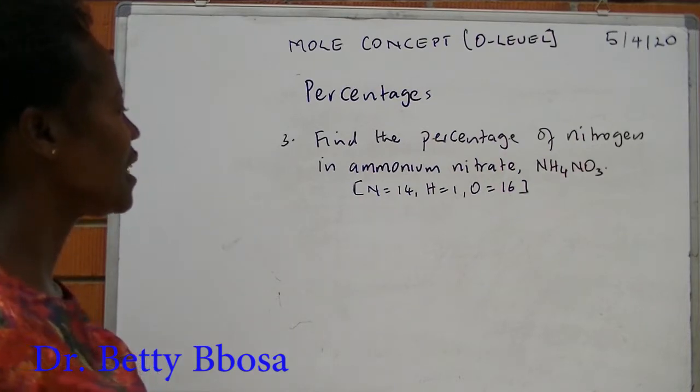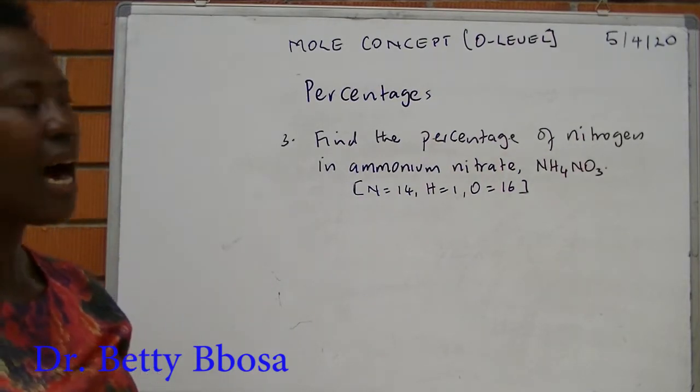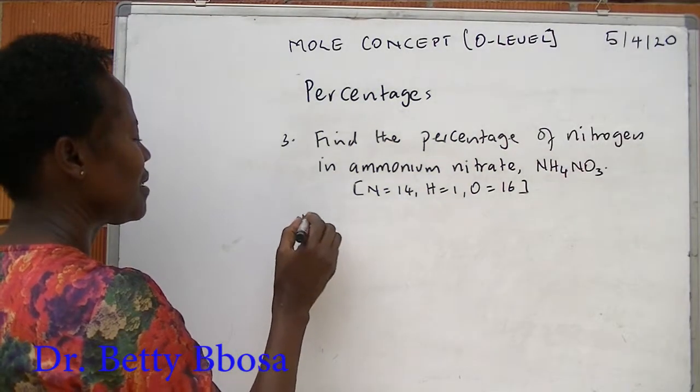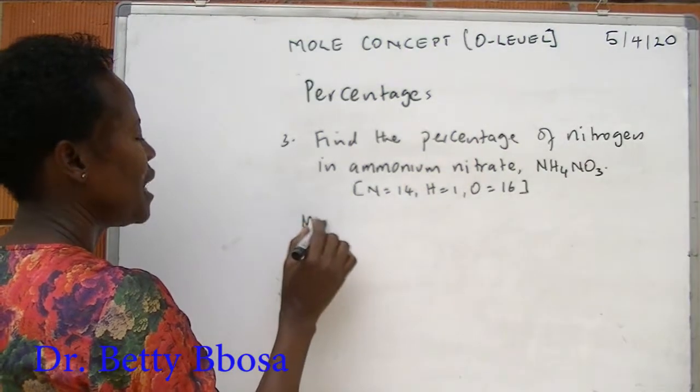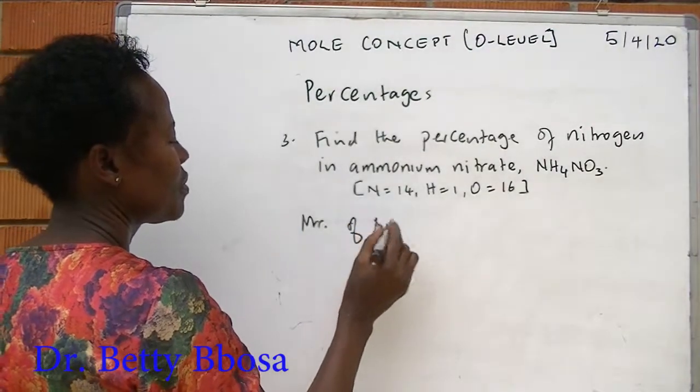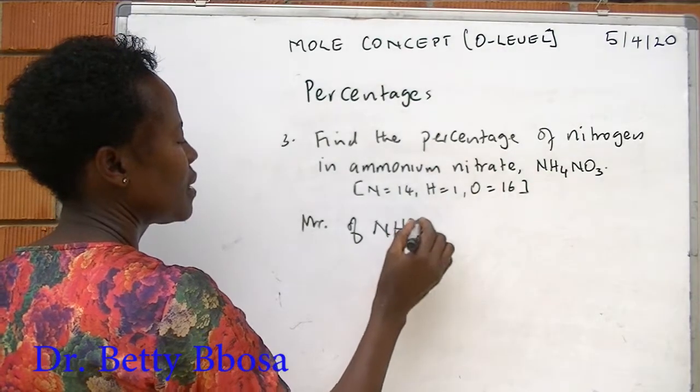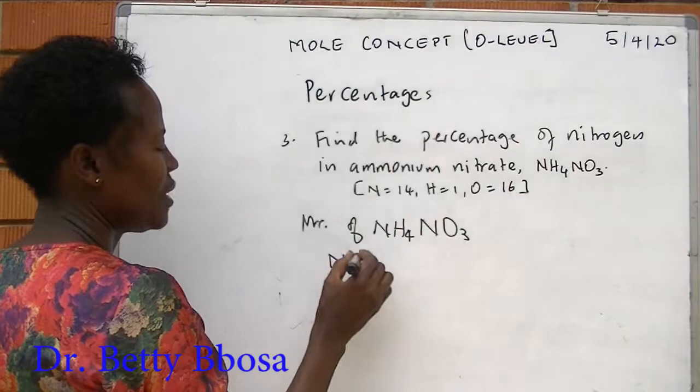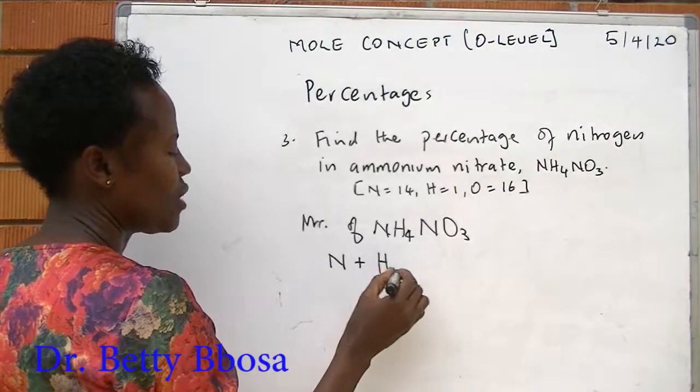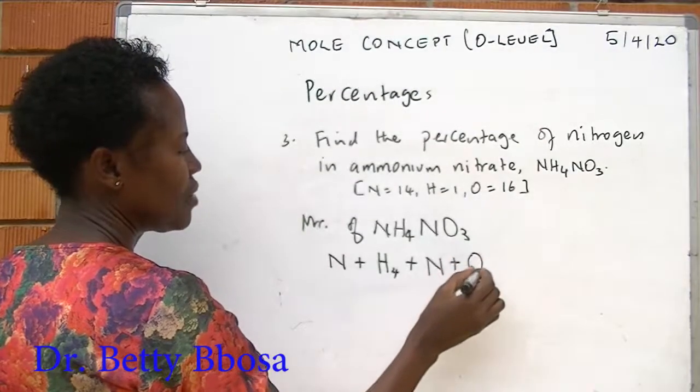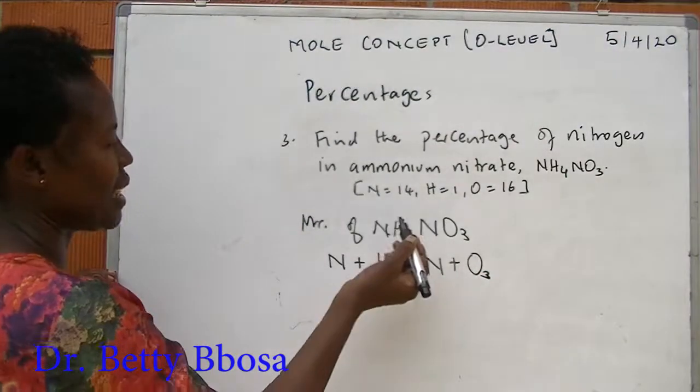Example number 3: Find the percentage of nitrogen in ammonium nitrate. Again, we have to get the molecular mass of ammonium nitrate. This is the same mass: nitrogen plus 4 atoms of hydrogen plus nitrogen plus 3 atoms of oxygen. Then I substitute.